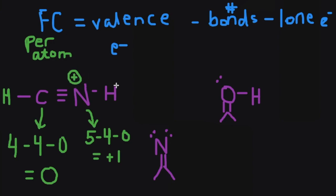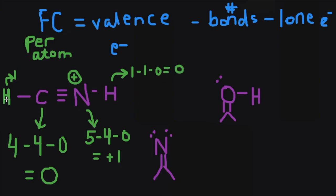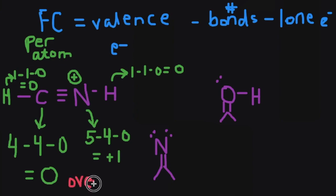The formal charges of hydrogens are usually zero, but let's take a look. Hydrogens have one valence electron, minus the number of bonds this hydrogen is making — just one to nitrogen — minus zero lone pairs, so this hydrogen has a formal charge of zero. Similarly, hydrogen making one bond to carbon minus zero lone electrons gives a zero formal charge. So the overall formal charge on this shape is zero for hydrogens and carbon, and a positive one for the nitrogen, giving an overall charge of positive one.